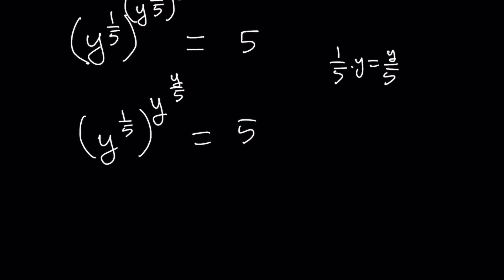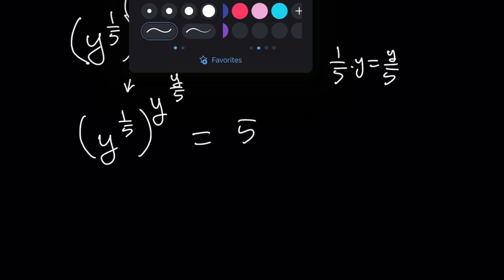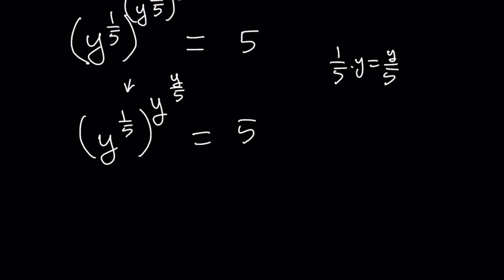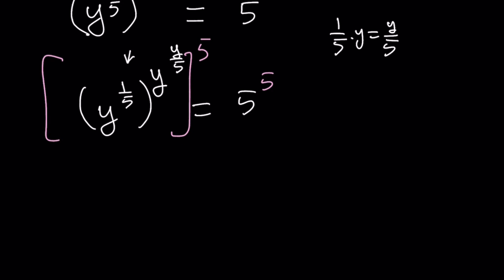This is a little better because I have a single base and a single exponent — well, sort of. They still have their own bases and exponents, but it's better than the original. So what can I do with this equation? I can raise both sides to the fifth power. That's going to eliminate the 1 fifth here and bring an extra 5 on the right-hand side. Let me go ahead and show it: that 5 is going to multiply the exponent y over 5.